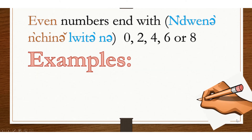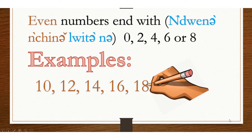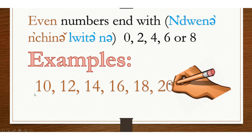If a number ends with 0, 2, 4, 6, or 8, it is even. Examples: 10, 12, 14, 16, 18, 20. 10 ends with 0, so it is even. 12 ends with 2, so it is even. 14 ends with 4, so it is even. 16 ends with 6, so it is even. 18 ends with 8, so it is even. 20 ends with 0, so it is even. And it is the same with other bigger numbers.